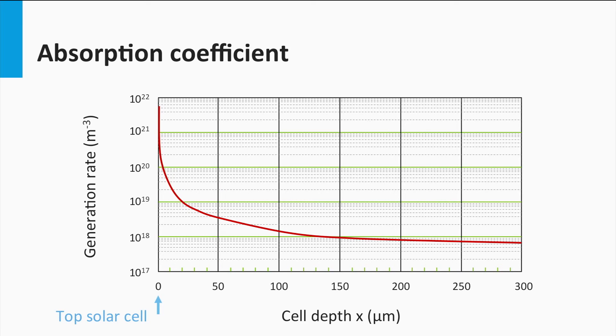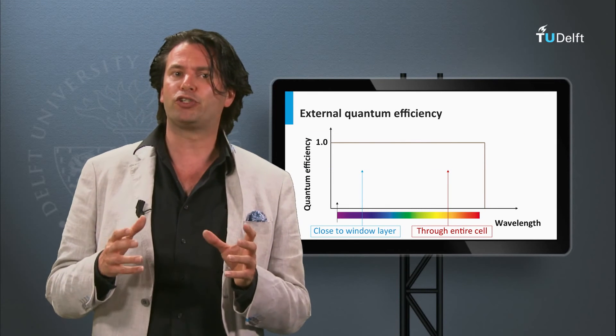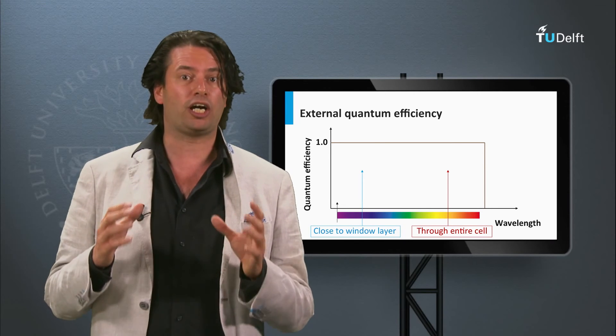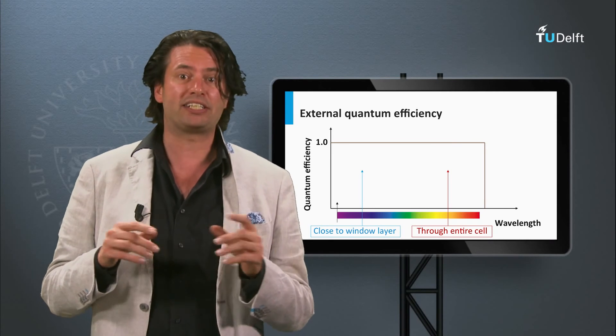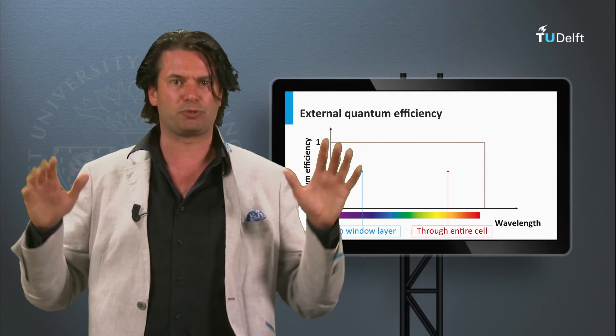As the absorption of photons generates excited charge carriers, the wavelength dependence of the absorption coefficient determines the local generation profile of the charge carriers. At the front side where the light enters the absorbing film, the generation of charge carriers is significantly higher than at the back side. It means, if we look at the EQE of a solar cell, the EQE values measured in the blue correspond to charge carriers generated close to the window layer, whereas the EQE in the red part represent charge carriers generated through the entire absorber layer.